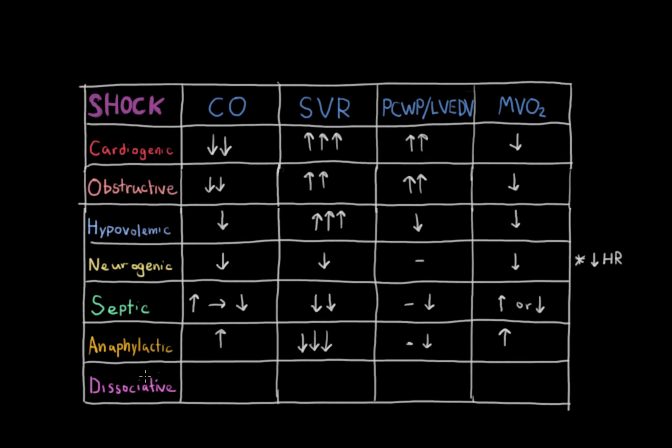Now last of all, we have dissociative shock. And this is a very interesting shock because both cardiac output and resistance are going to be increased. The tissues are not getting oxygenation because oxygen cannot dissociate off of red blood cells. So because of that, the body attempts to increase the heart rate and improve cardiac output as well as clamp blood vessels down to distribute oxygen properly.